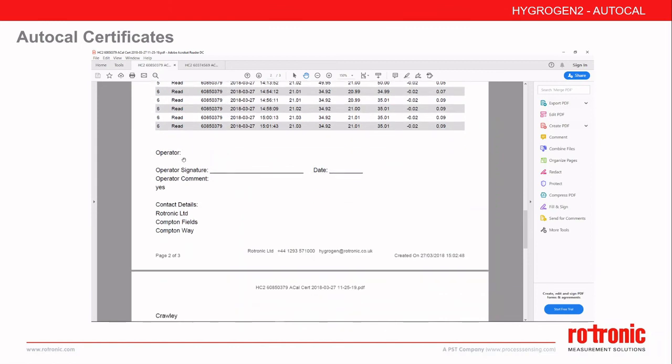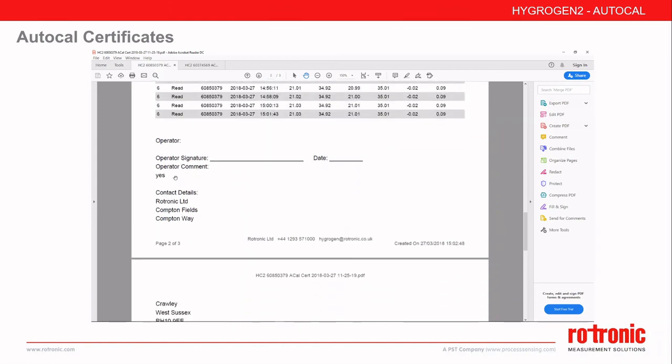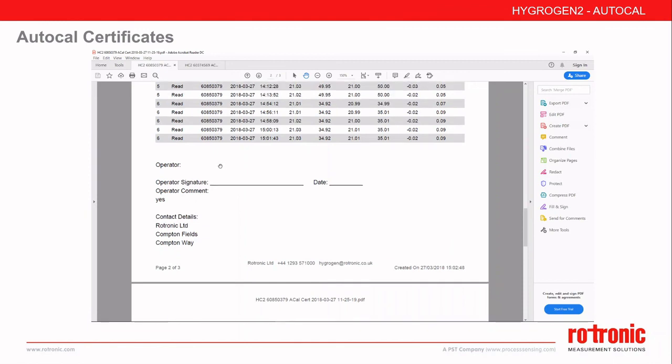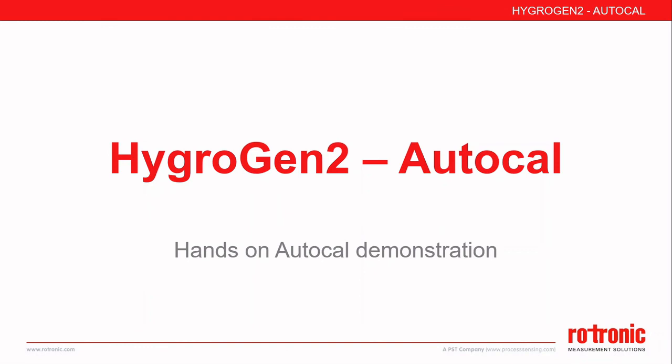Finally, we have the same summary details in terms of the company performing the work and the operator entered. This concludes the hands-on demonstration video for AutoCal. For more details, please visit www.rotronic.com, review the AutoCal manuals for the Hygogen itself, or speak to your local sales advisor.